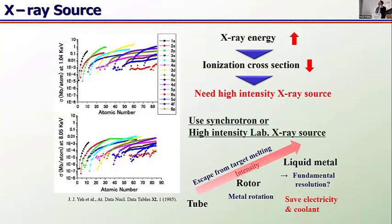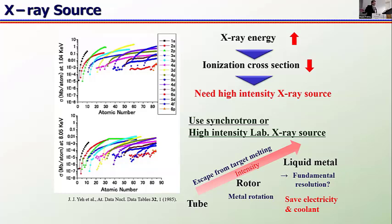There is an issue with using higher-energy X-rays: by increasing X-ray energy, the ionization cross-section decreases. So we need a higher-intensity X-ray source than conventional XPS. We can use a synchrotron, but that is not convenient for everybody. So we want to have a lab-level X-ray source for HAXPES.